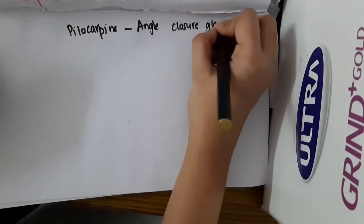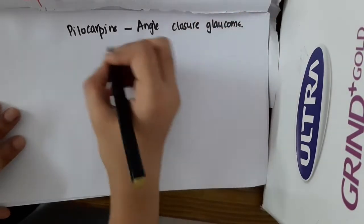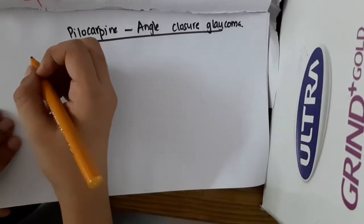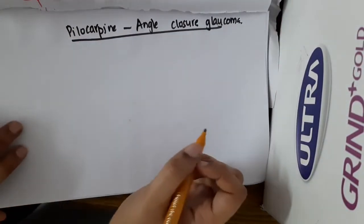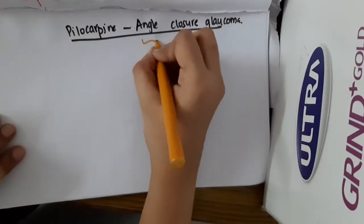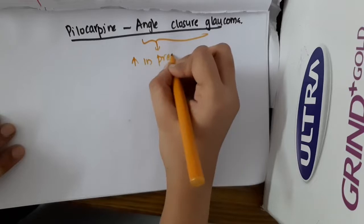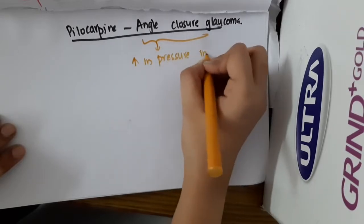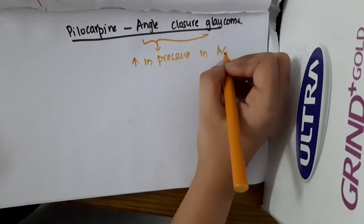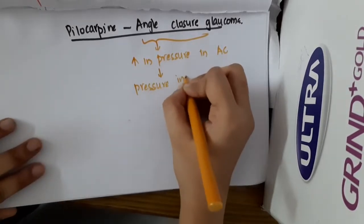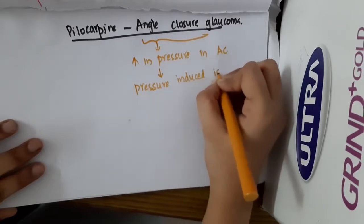Pilocarpine and angle closure glaucoma. If there is angle closure glaucoma, there is an increase in pressure in the anterior chamber. Because of the increased pressure in the anterior chamber, this causes pressure-induced ischemic paralysis of the iris.